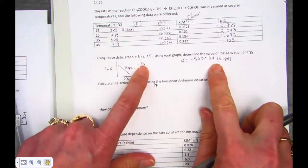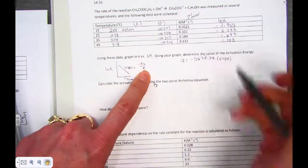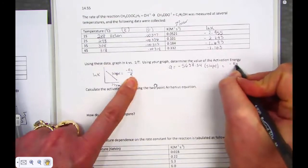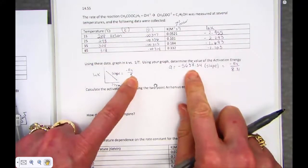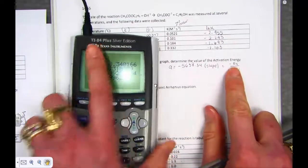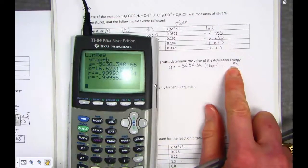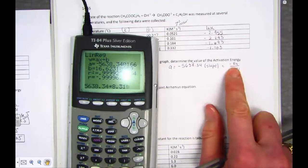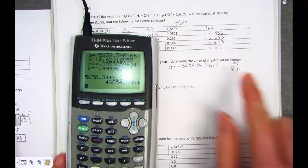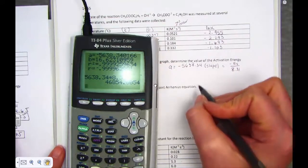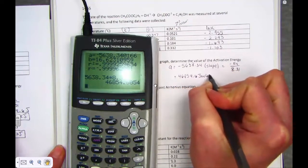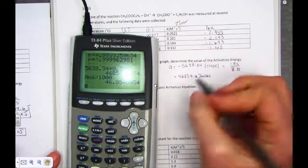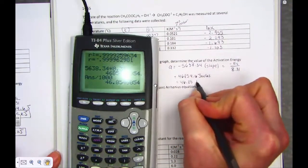This slope is equal to negative Ea, which comes out in joules, over the R constant. So the slope is negative Ea over 8.31. I just merely have to take the slope from the diagnostics, multiply it by 8.31, and take the opposite of it, because activation energy is always positive. So 5638.34 times 8.31, and I get my value for activation energy. It comes out to be 46854.6 joules, or if you prefer, 46.85 kJs.